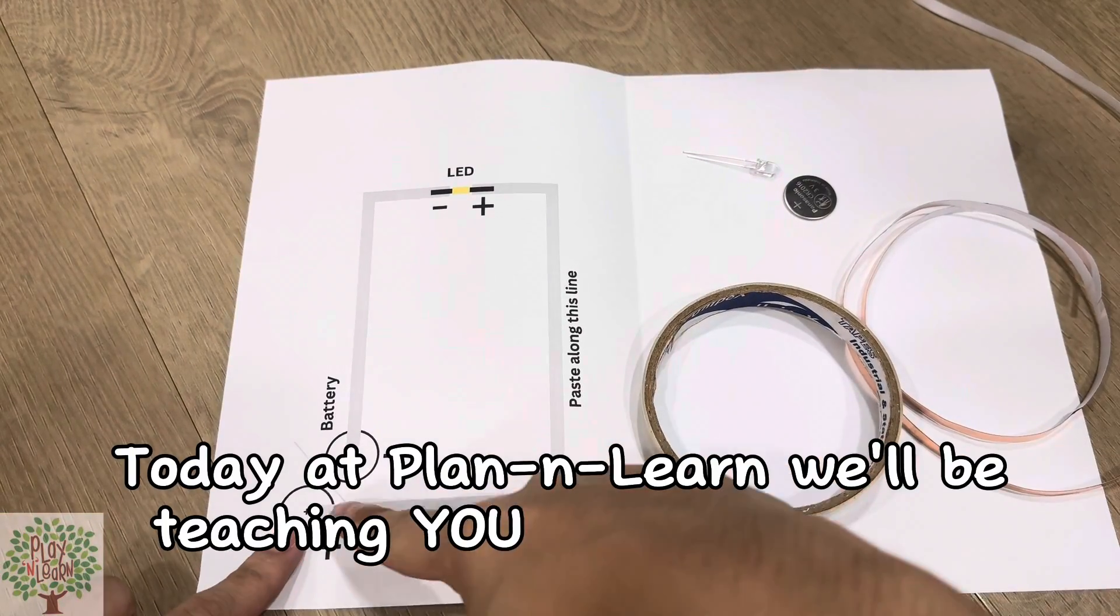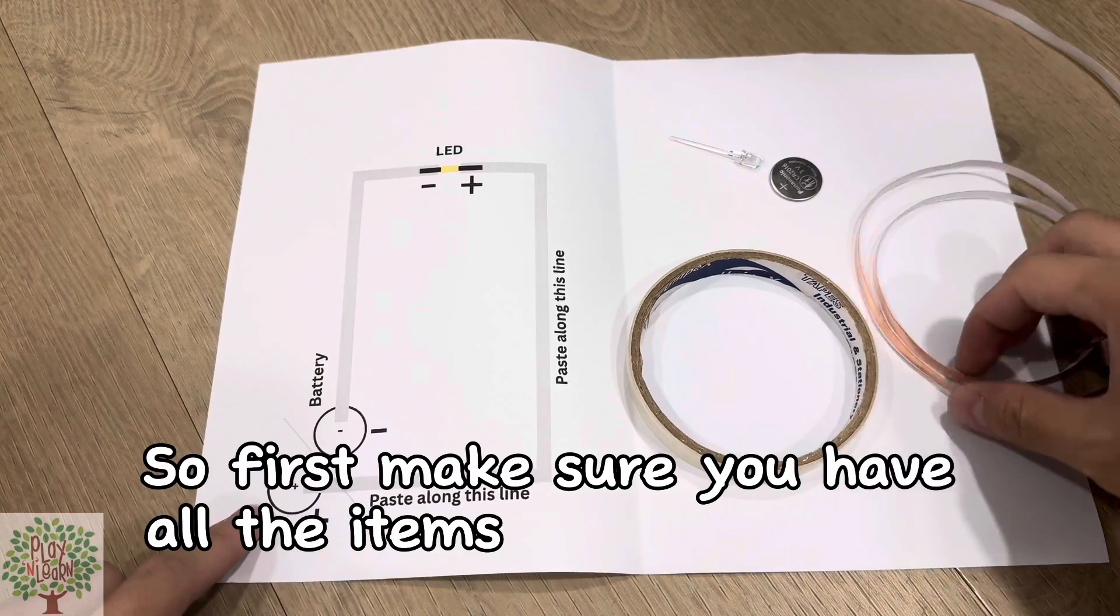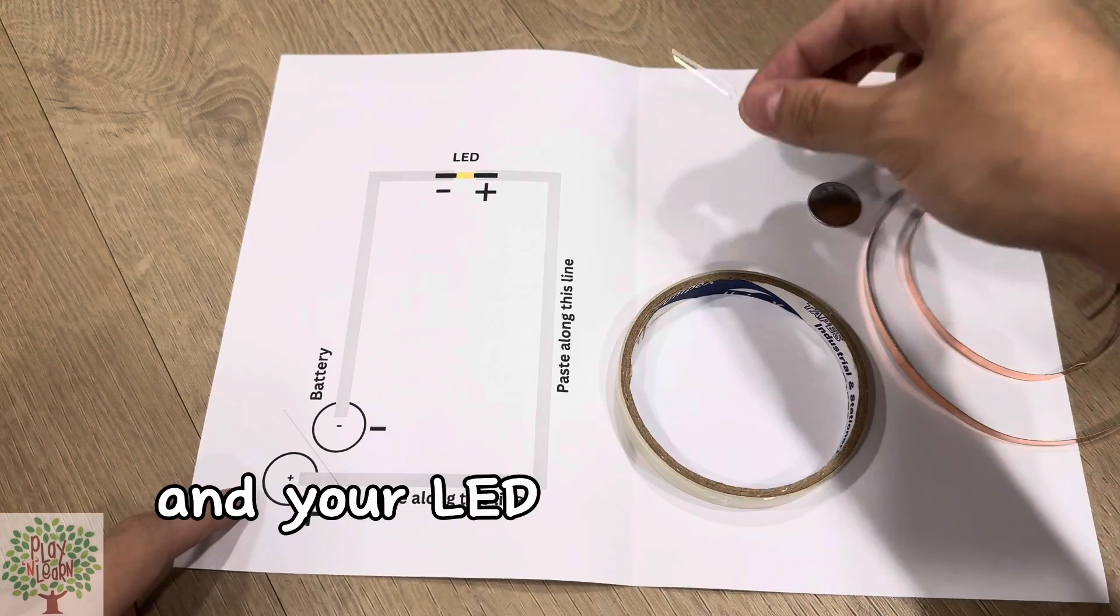Today at Play and Learn, we'll be teaching you how to make an LED card. So first make sure you have all the items such as copper tape, tape, battery and your LED light.